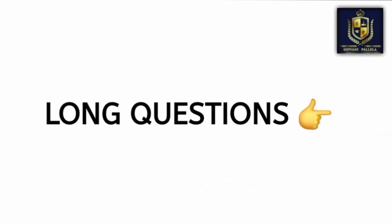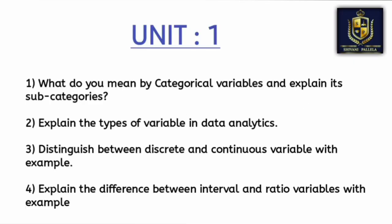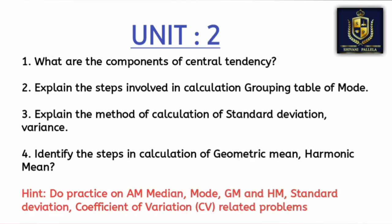Now I will discuss the long questions. For long answers, at least two and a half to two sides of a page are compulsory — you need to write front and back, and try to attempt each and every question whether you know it or not. Out of the time duration, attempt whatever they have asked; if they are asking five questions, you should attempt all five. From unit number one, types of variables in data analytics is very much important, and differences between discrete and continuous variables with examples is also important, as are interval and ratio variables with examples.